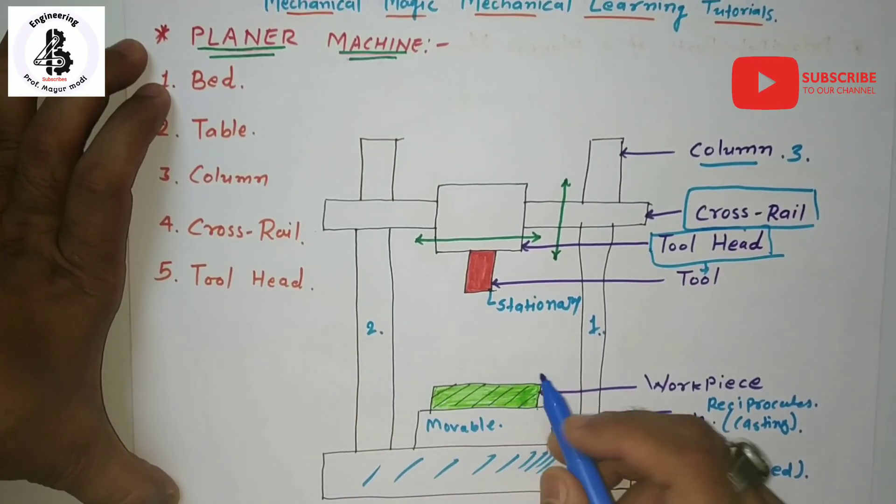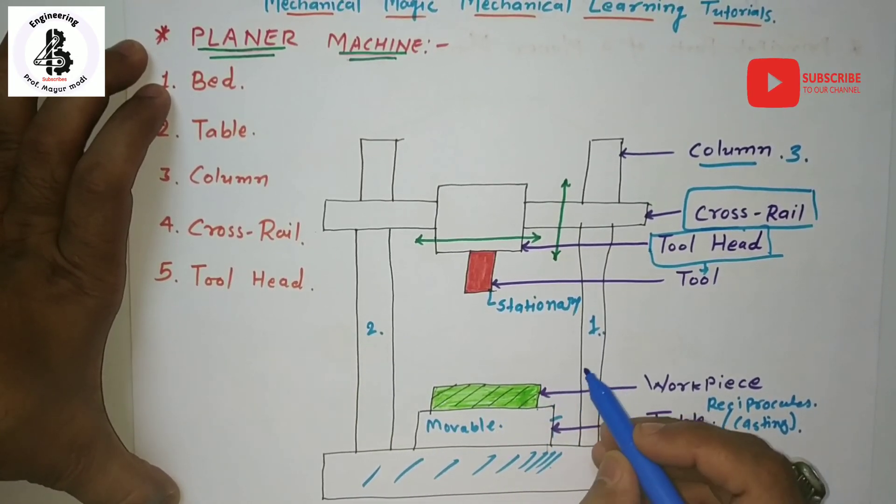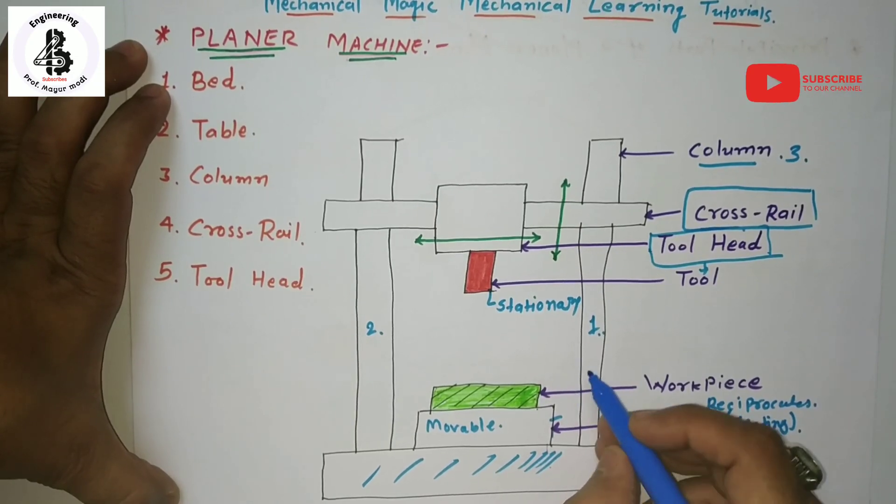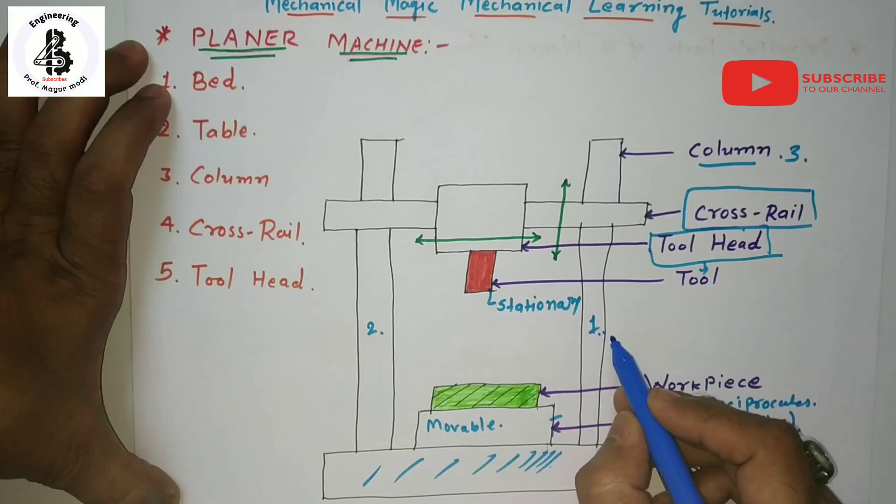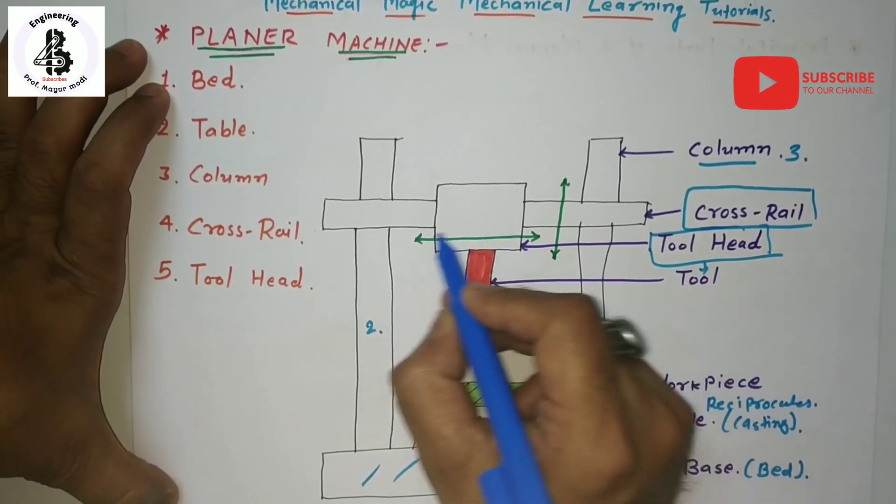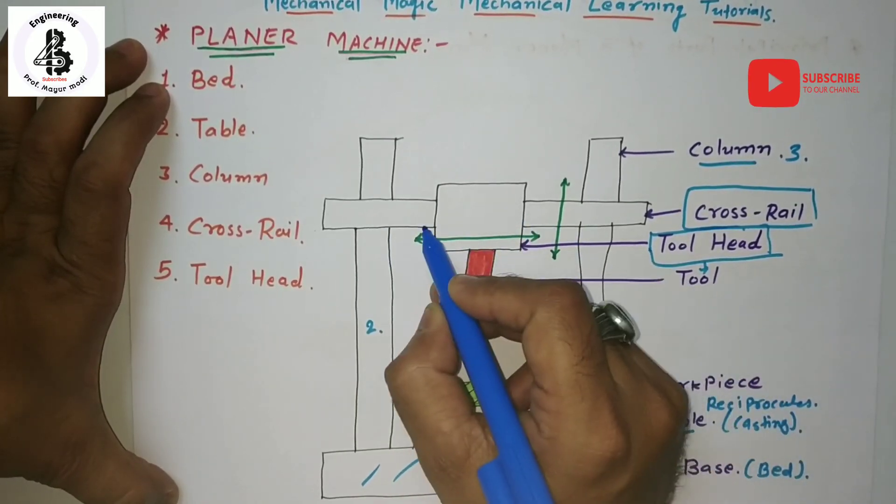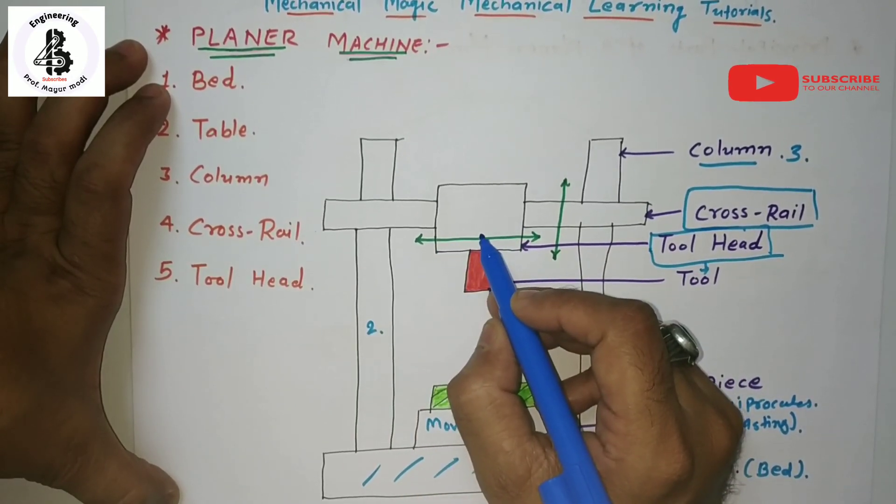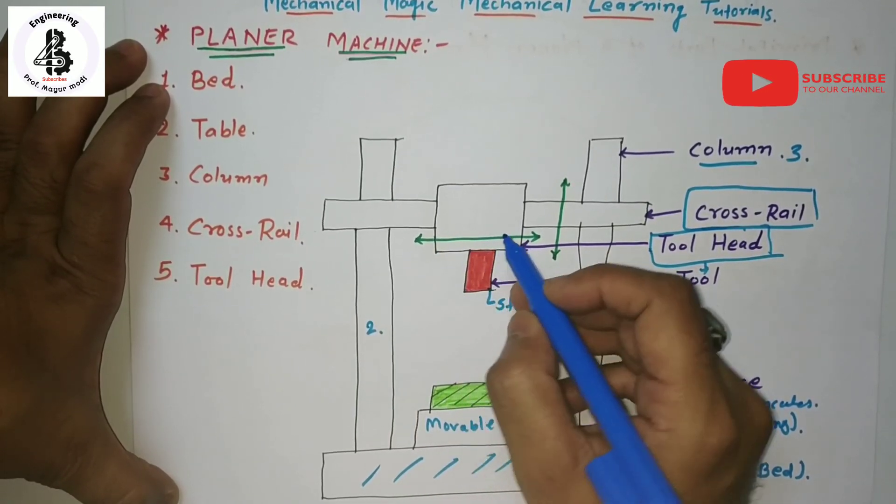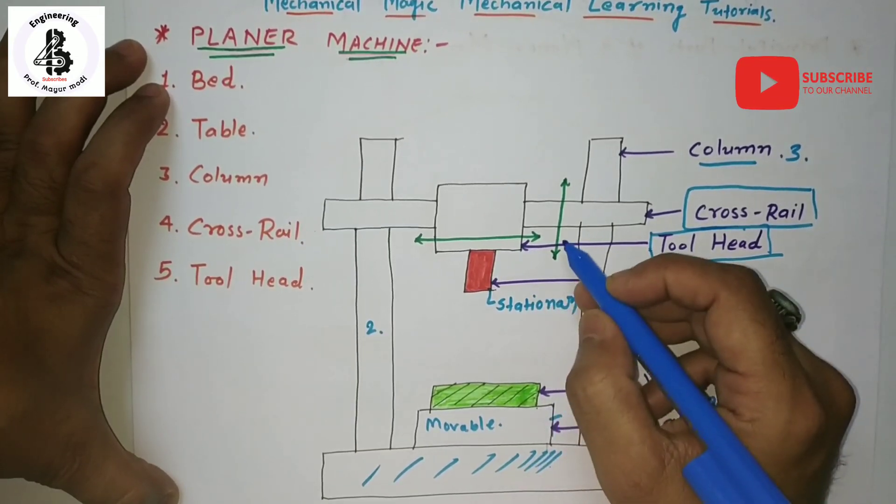They are heavily ribbed to take up the serving during the cutting force. It provides the precision and guideways onto which the cross rail slides up and down. The movement of the cross rail moves the tool head up and down for accommodating different heights of the workpiece.